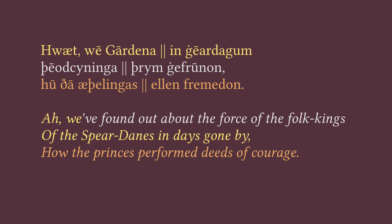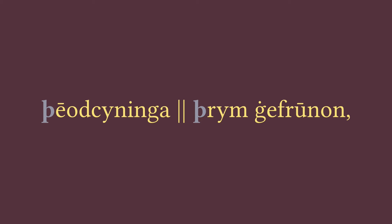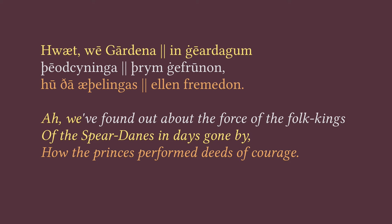As an example, in the line 'þēod-cyninga þrym ġefrunon,' we have alliteration of the sound represented by a letter called thorn, which looks like a combination of a lowercase b and a lowercase p. It represents the 'th' sound, like 'thin' or 'the' depending on where exactly in the word it finds itself. In this line, we are alliterating the word in the first half, 'þēod-cyninga,' with the word 'þrym' in the second half. The rules do get more complicated than that, but I think that's enough to get us started. So let's move on and look at these lines one word at a time.